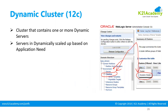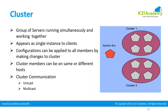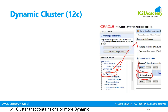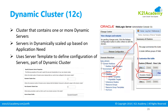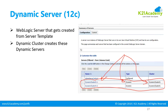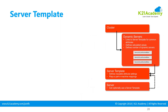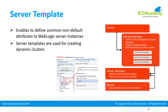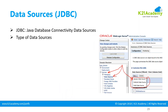To recap: in this lesson we looked at the cluster, which is a collection of two or more servers on which an application is deployed, and from the client's point of view they act as a single unit. Cluster members can be on different hosts or the same host, and they communicate using unicast or multicast, which we will look at in the high availability module. Then there's the dynamic cluster, which is a cluster whose members automatically grow or shrink based on load. Those members are called dynamic servers because they are dynamically created by the dynamic cluster using a server template. You can define your own server template. Let's head on to the next lesson where we look at JDBC and JMS.